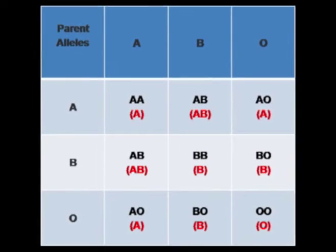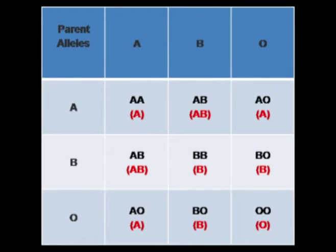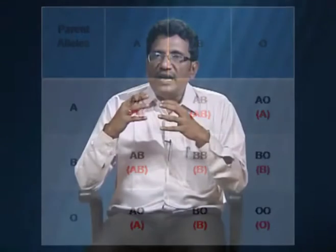In other words, type O individuals inherit a recessive O allele from both parents. The A and B alleles are co-dominant; therefore, if an A is inherited from one parent and a B from the other, the phenotype will be AB. Agglutination tests will show that these individuals have the characteristics of both type A and type B blood.